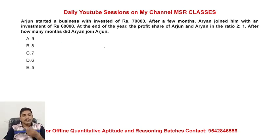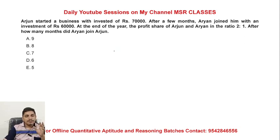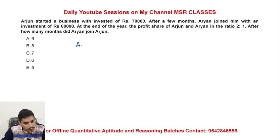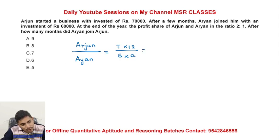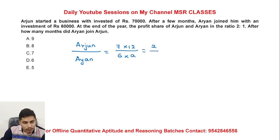Arjun started a business with an investment. After a few months, his partner joined the business. At the end of the year, the profit ratio is 2.1. The right ratio is 2.1 — 6 parts to 7 parts, 12 months to some months.